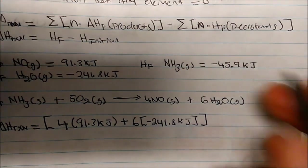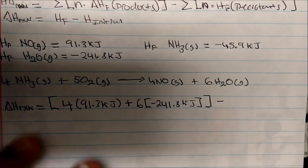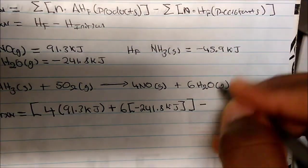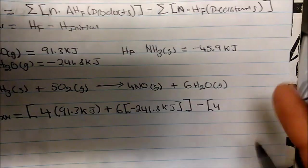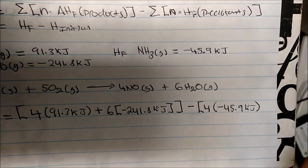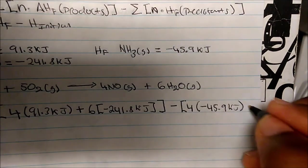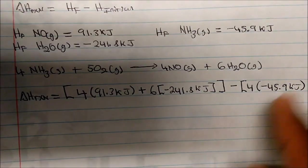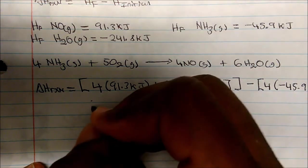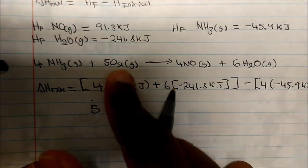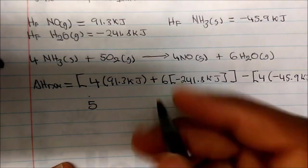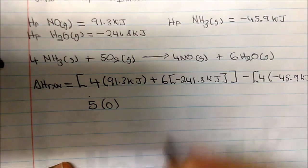It's the summation of the products minus the reactants. For the reactants, for ammonia it's four times the heat of formation of ammonia, which is negative 45.9 kilojoules. Then we add oxygen gas — five moles. O₂ gas is in its elemental form, so its heat of formation is actually zero.